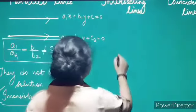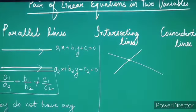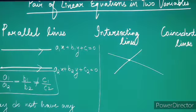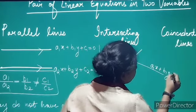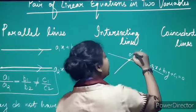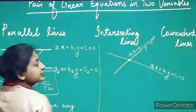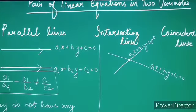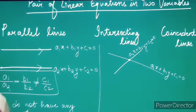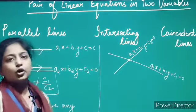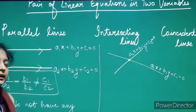Next, we have intersecting lines. When two lines intersect at a point — when they cut each other at a single point — such lines are known as intersecting lines. Suppose the equation of the first line is a1x + b1y + c1 = 0 and the equation of the second line is a2x + b2y + c2 = 0. Since these lines intersect at a point, they have a common solution. To find it, we can draw their graphs or apply the elimination method, cross multiplication method, or substitution method.